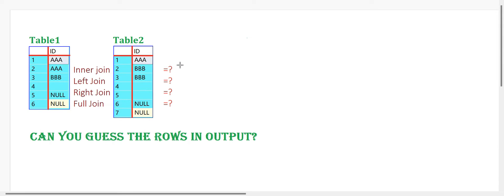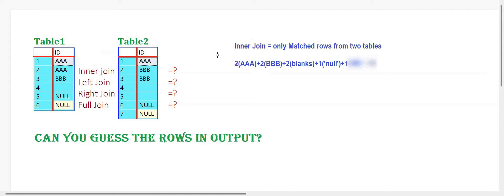First we need to understand how the join types work. We have four major types of joins: inner join, left join, right join, and full join — that means full outer join. First we can see the inner join. The inner join formula is only matched records from the two tables — it gives you only the matched records from both tables.